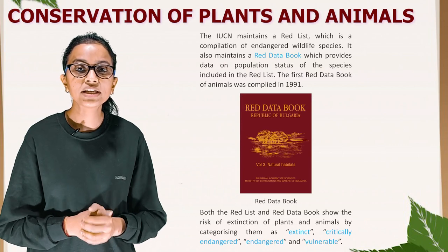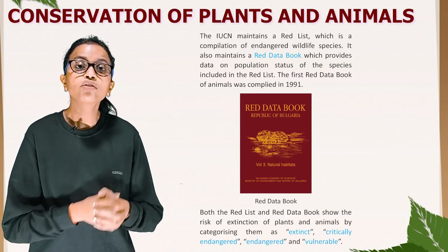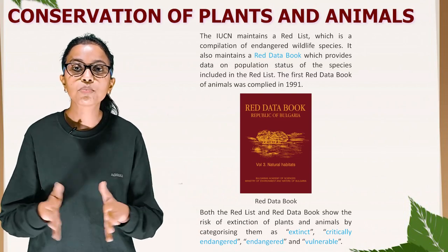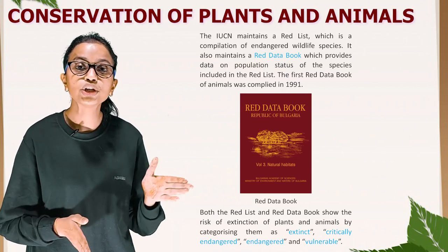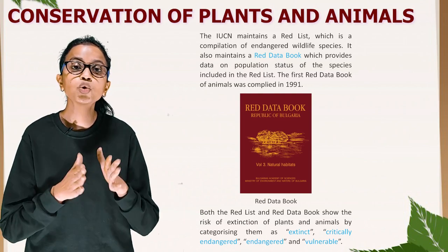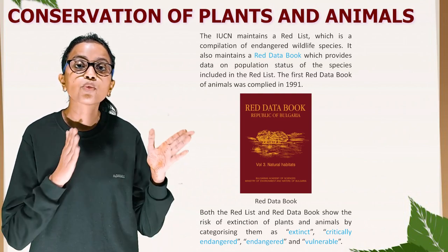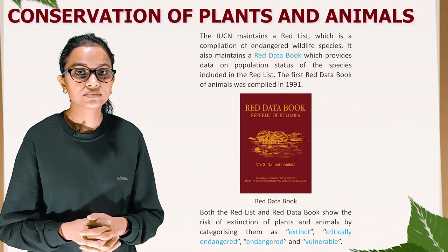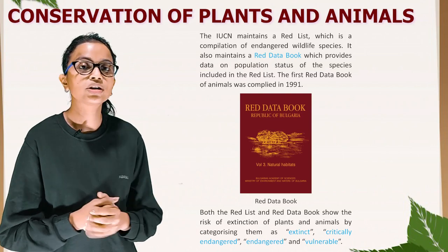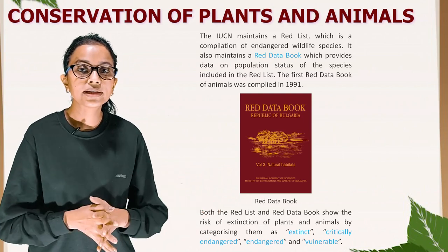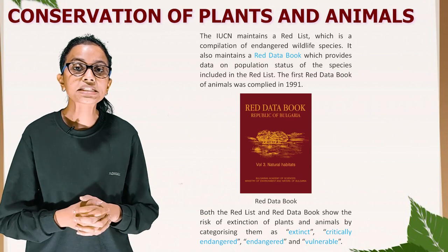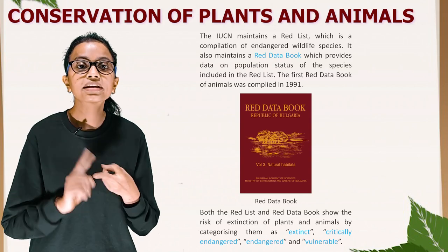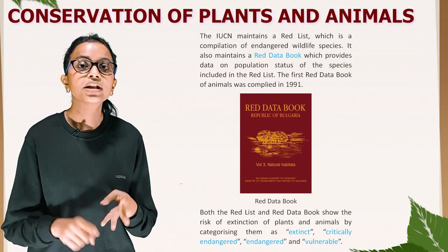The IUCN maintains a red list, which is a compilation of endangered wildlife species. It also maintains a red data book, which provides data on population status of the species included in the red list. The first red data book of animals was compiled in 1991. Both the red list and red data book show the risk of extinction by categorizing species as extinct, critically endangered, endangered and vulnerable.